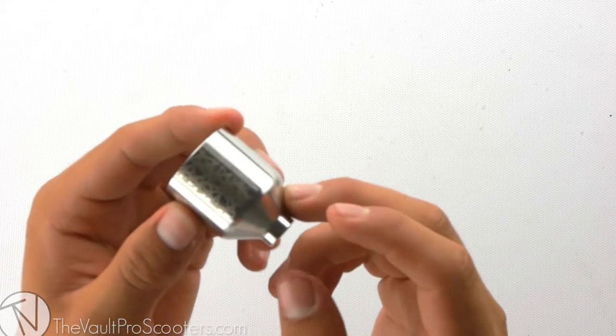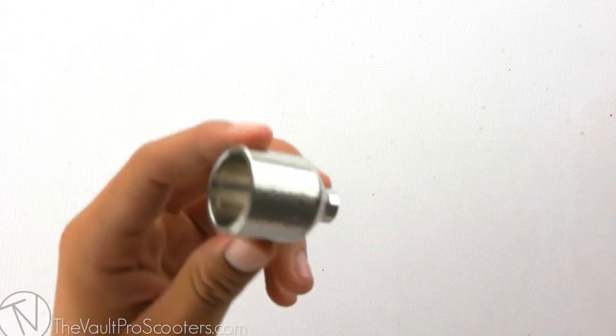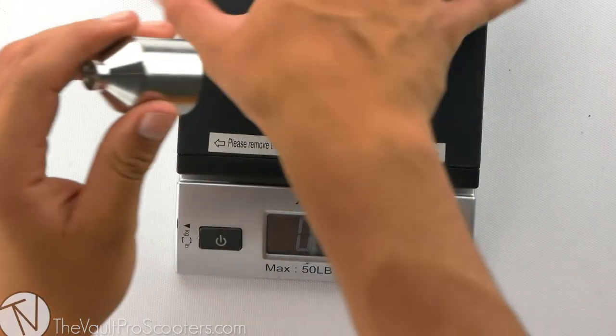This peg comes in two colors: black and the raw that I'm showing you here. The Flint Peg is made out of steel, so let's see where it stands on the scale. It comes in at 2.2 ounces.